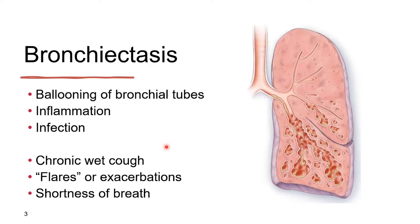Typically, patients present with a chronic wet cough, and frequently there are flares, what we call exacerbations. These may be represented by an increase in cough, an increase in the amount of sputum produced, or a change in the color of the sputum that may signify a bacterial or other type of infection. These frequently require antibiotics for treatment, and sometimes antibiotics may need to be continued over the long term. As the disease progresses, patients might experience shortness of breath as well.